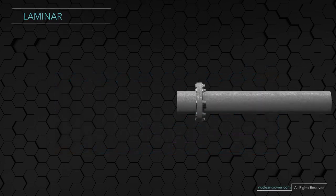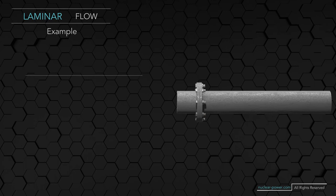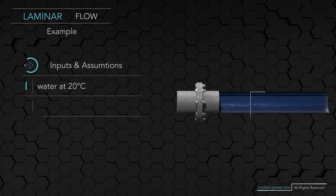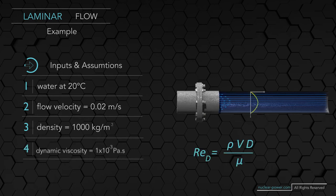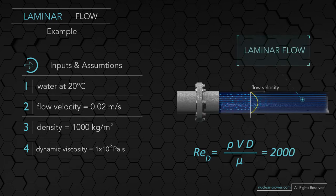Let's calculate the Reynolds number in a specific case. We will calculate the Reynolds number for water flow in a circular pipe with a diameter of 10 centimeters. The flow velocity is 0.02 meters per second, and the dynamic viscosity for water at 20 degrees Celsius is 0.001 pascal seconds. Using the formula, the resulting Reynolds number is 2,000, so the flow is most probably laminar, but it is very close to transition flow.